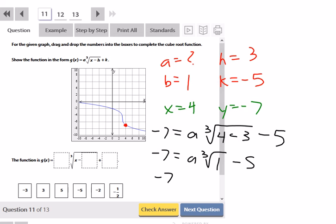And 1a is just a. So negative 7 is equal to a minus 5 plus 5 plus 5. So a would be negative 2. And that is one of our choices. So let's go with that one.